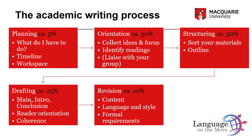So if you have 20 hours in total for your assignment — and that's what the value of the research blog post in this unit, which is 40% of your final mark, translates to — you should allocate one hour to planning, six hours to orientation, another six hours to structuring, five hours to drafting, and two hours for revision. If you have more or less time or a longer or shorter assignment, just figure out what those percentages mean in hours for your specific circumstances.